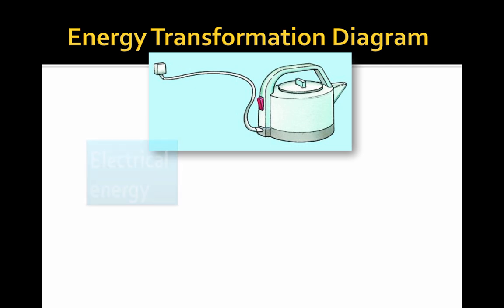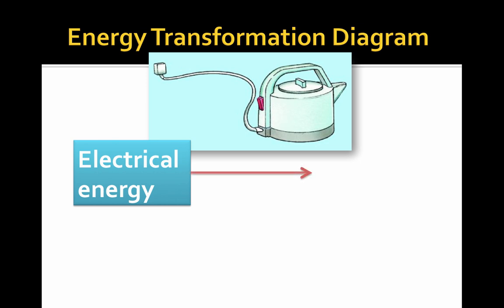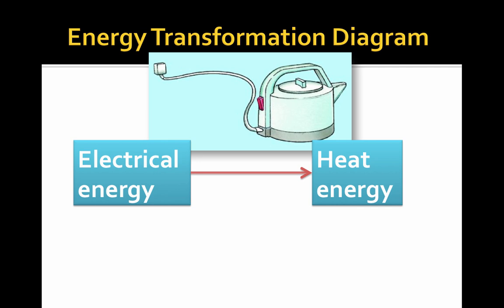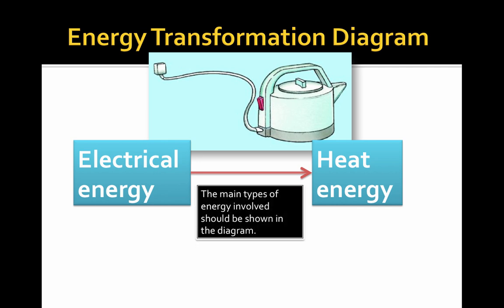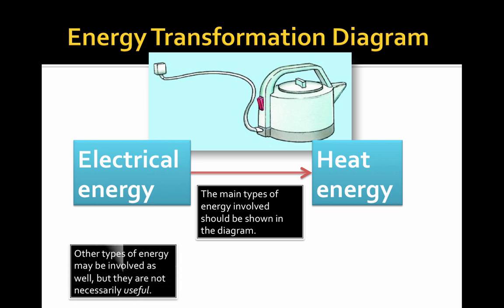You can draw energy transformation diagrams that show different forms of energy. For example, how does a hot water kettle work? It takes energy from the electrical socket — electrical energy — and converts it into heat energy. Its primary purpose is to boil the water, so it's converting electrical energy to heat energy. It might also produce a little light energy and make a sound, but those are not the primary outputs. The primary transformation is electrical energy converted — shown by an arrow — to heat energy.